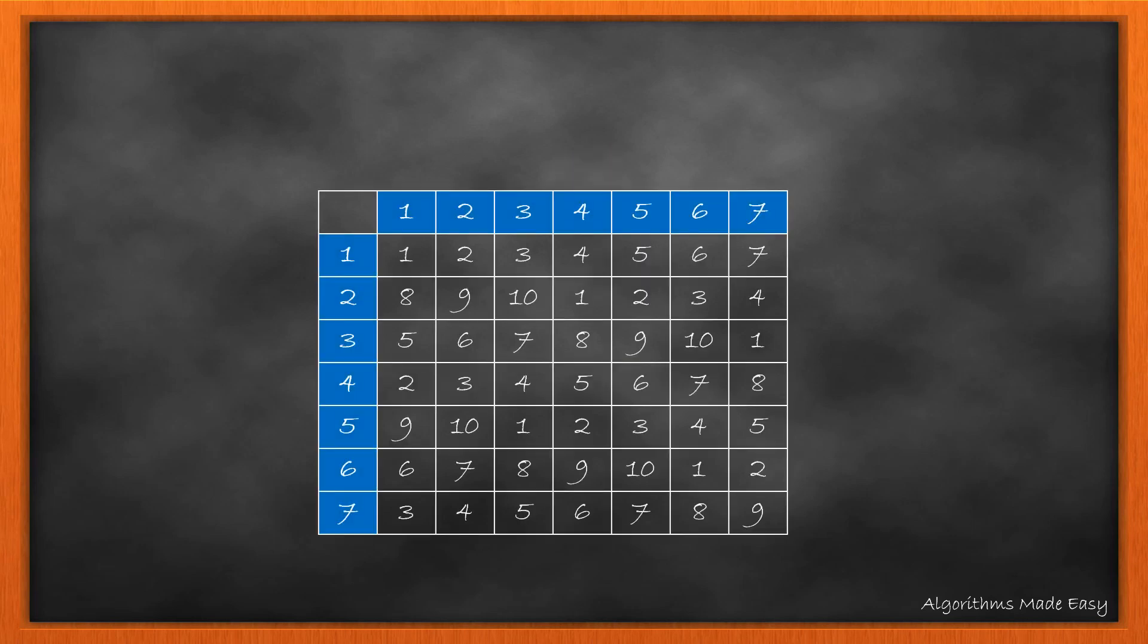Let's understand the basic idea that we will use in our video. Since we are given a function that generates a random number between 1 to 7 and we need to find out the number between 1 to 10, we need to find out the scope.